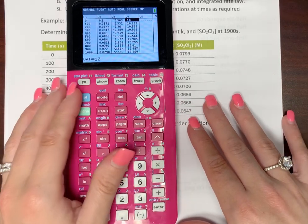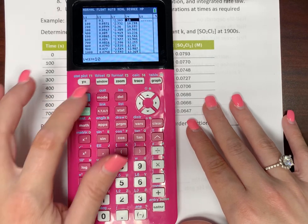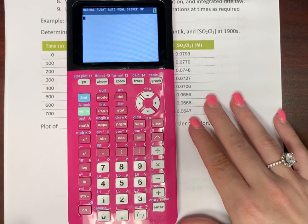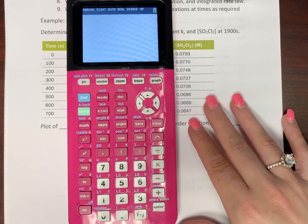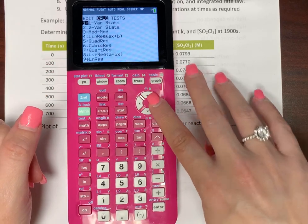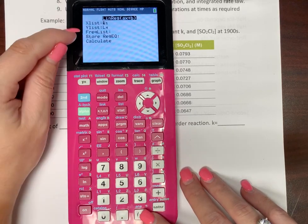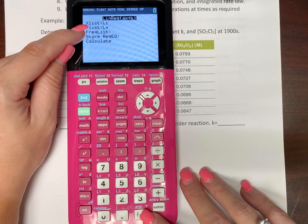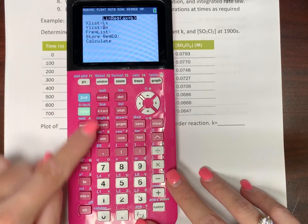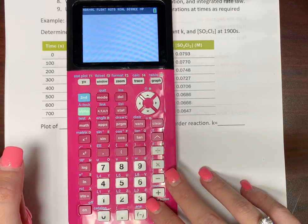Now, we have all this data entered. Now we need to determine, well, what is the order of the reaction? Alright, so now let's exit out. So let's second and quit. Now we need to run some regression equations. So to run linear regressions, you go to stat, calc, linear regression, and our x list is always going to be list one. That's our time. Now our y list, we want to determine if this is a zero order reaction, so that's going to be list two. Okay, go down and just hit calculate.